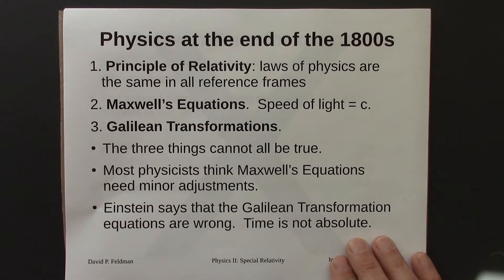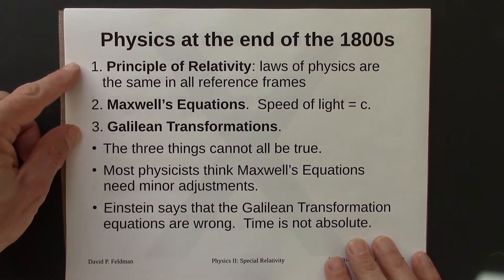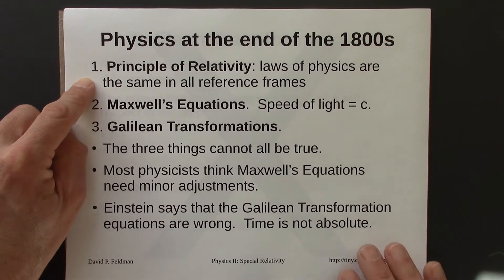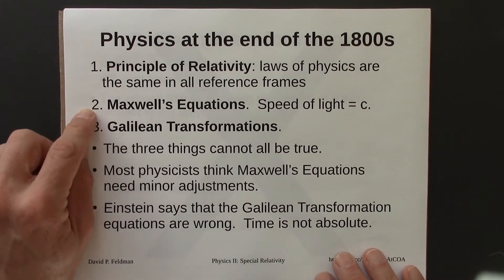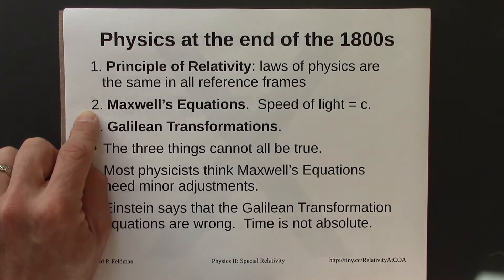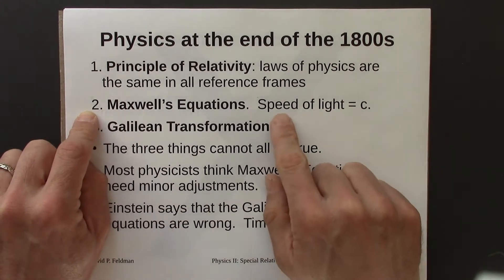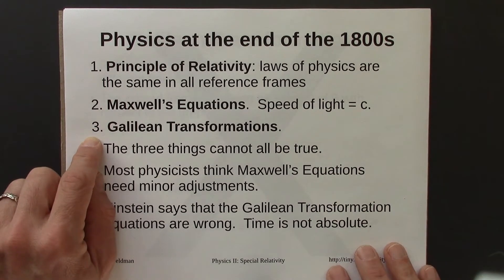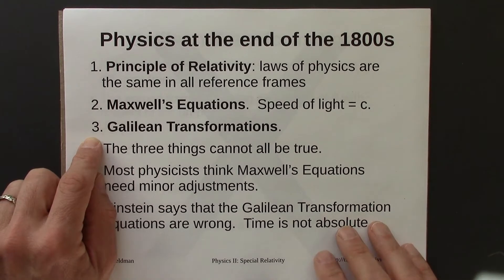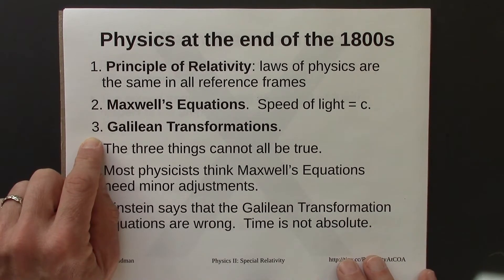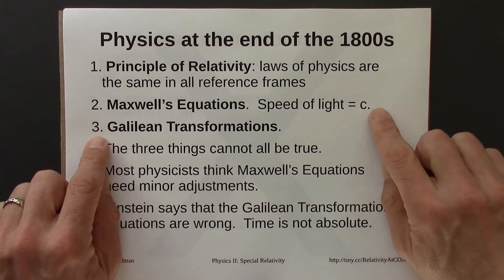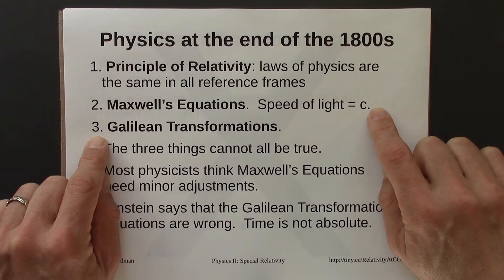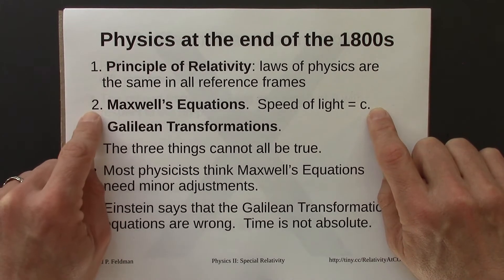Here's the state of affairs in physics at the end of the 1800s. There are three statements: the principle of relativity, that the laws of physics are the same in all reference frames; Maxwell's equations, the law of physics that says the speed of light is c; and the Galilean transformations, which say that velocity may be measured differently in different reference frames — and that conflicts with the law that the speed of light is c.